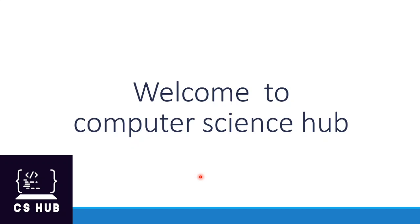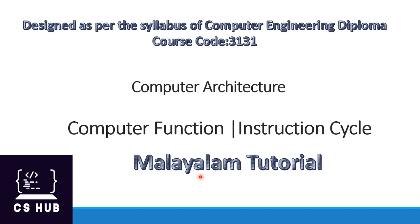Hello everyone, welcome to Computer Science Hub. Today we are going to discuss the topic: computer function and instruction cycle. We are dealing with the syllabus of computer engineering diploma, subject is computer architecture, course code 3131. This is the first time we will discuss the Von Neumann architecture and the simple concept of computer components.